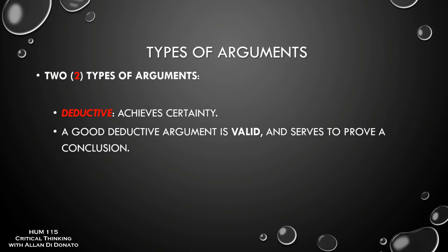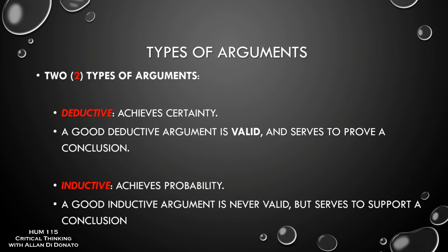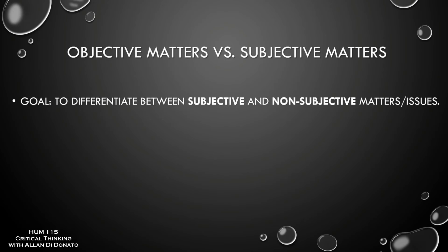There are two basic types of arguments. In a deductive argument, the conclusion follows necessarily from the premises — we achieve certainty. A good deductive argument is valid and proves its conclusion. In an inductive argument, you never achieve certainty — at best high probability. You can have a good inductive argument, but it's not 'valid' in the strict sense; it supports but doesn't prove the conclusion. The quick distinction: deductive gives a necessary or certain conclusion; inductive gives a probable conclusion.